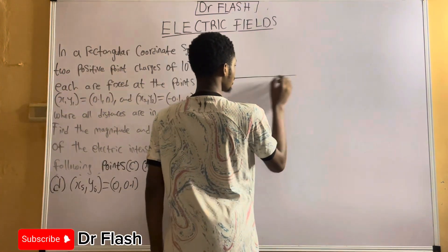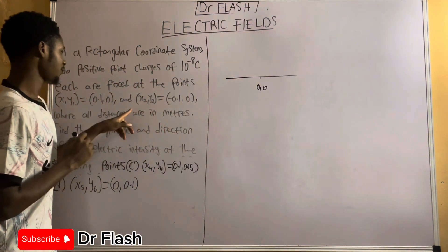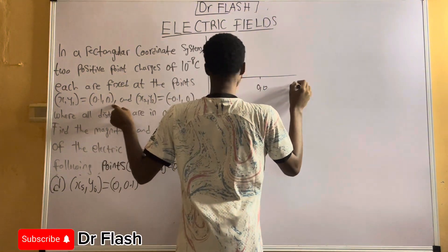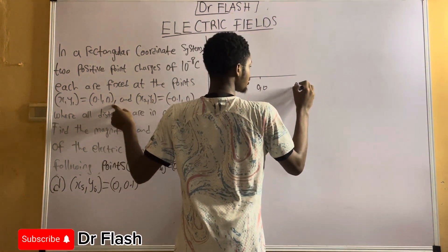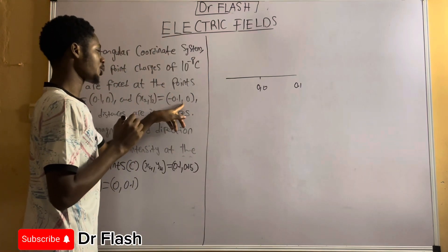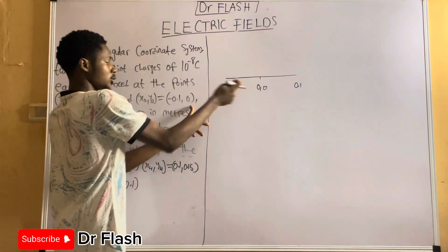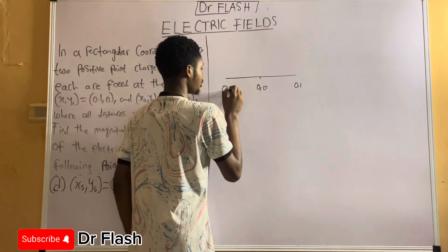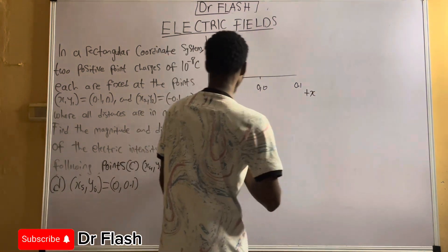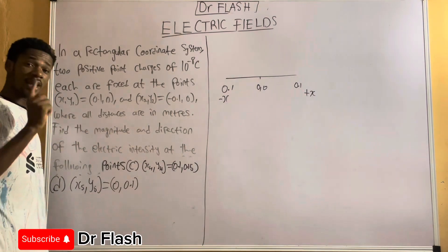We're going to draw a diagram on the board. We have our origin at 0,0. The first coordinate is 0.1 and 0, so y is 0 and x is 0.1, placing it on the positive x-axis. Then we have minus 0.1 and 0, so y is 0 on the straight line, and negative 0.1 is on the negative x-axis.